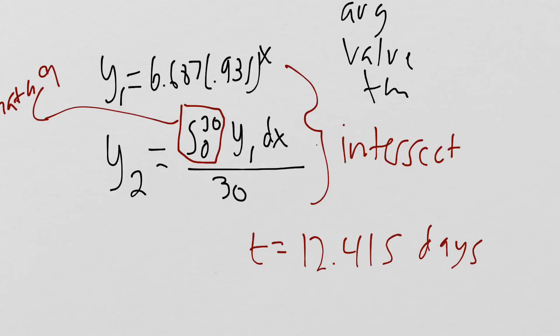So a little bit into the 12th day, the amounts in the bin is exactly equal to the average amount over the course of the 30 days. You really need to make sure you show your work here because you get one point for just knowing what the average value theorem is. Make sure you write everything down. Everything you're putting in your calculator, write it down, and make sure you write down your final answer.